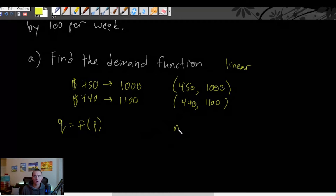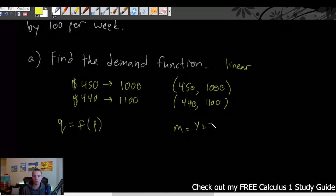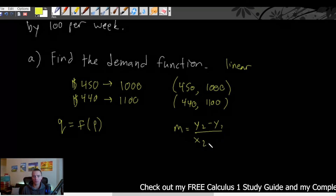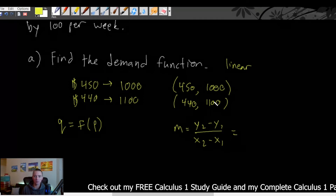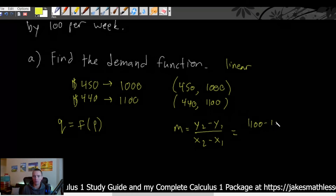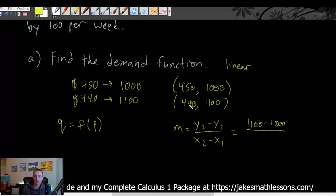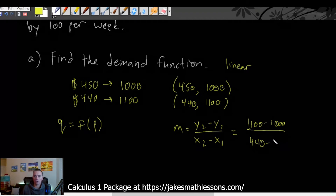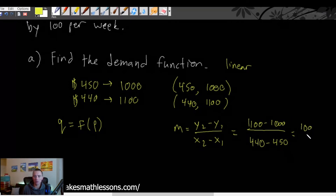We can find the slope of this linear demand function using m = (y₂ - y₁) / (x₂ - x₁). That gives us (1100 - 1000) / (440 - 450), which is 100 / -10, so our slope is negative 10.